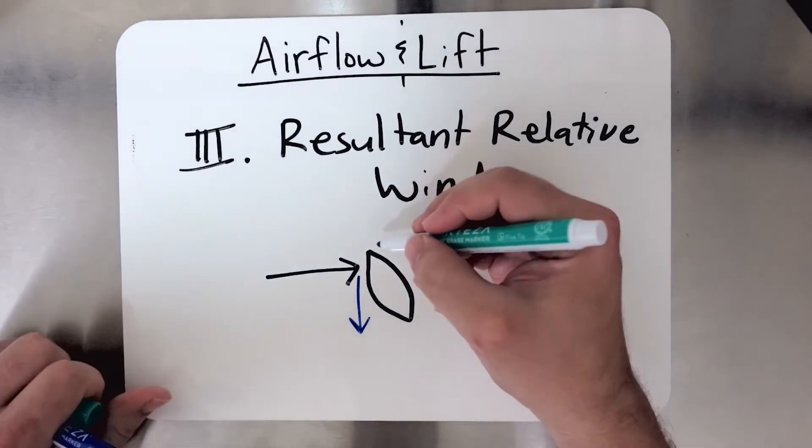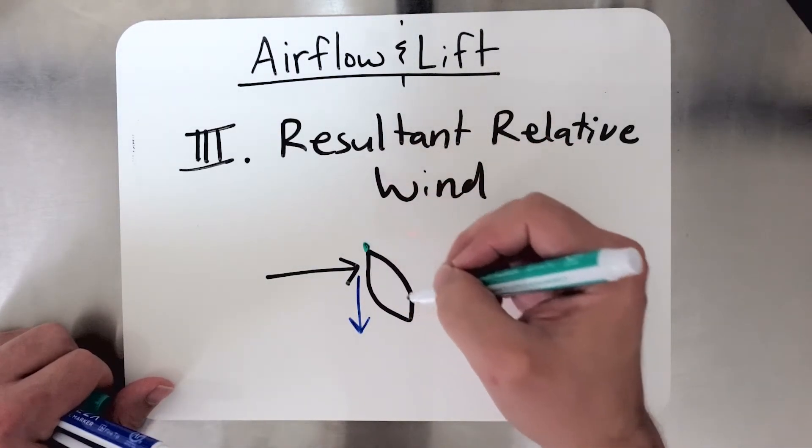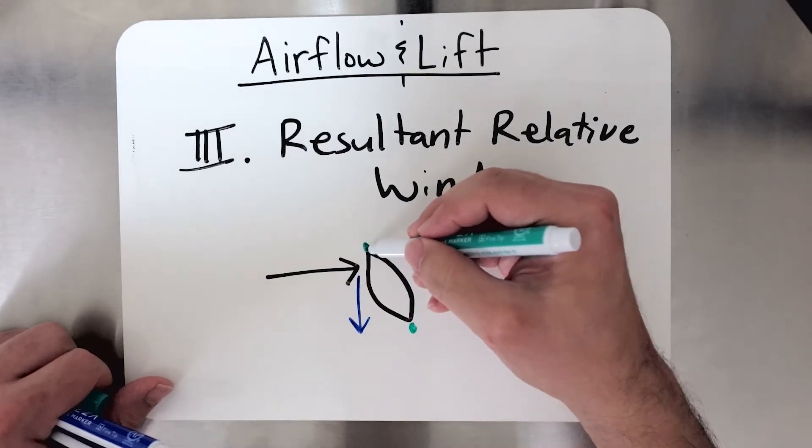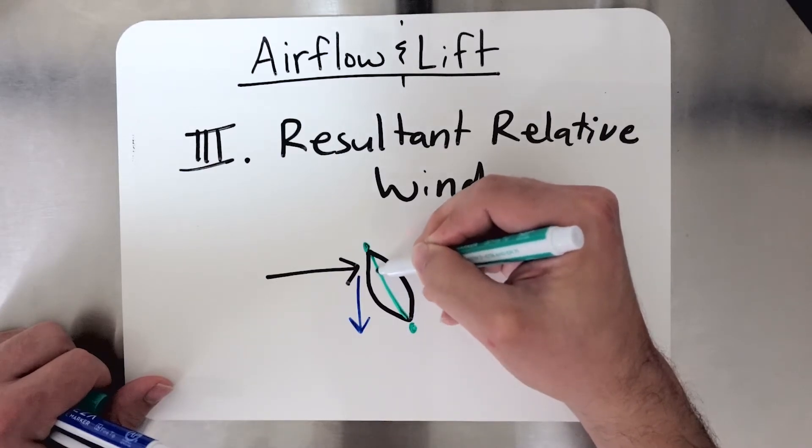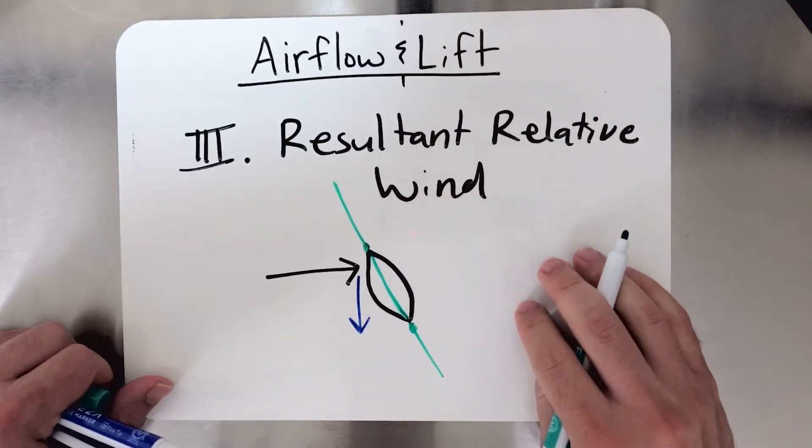Now, if we take this airfoil and sort of take a point at the leading edge, and a point at the trailing edge, and we connect these with a line, let's connect them with a line, we're going to get this chord line, okay?